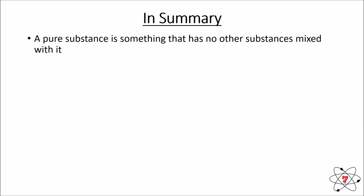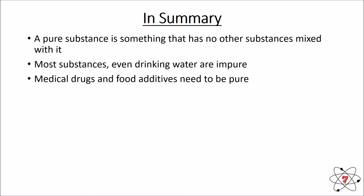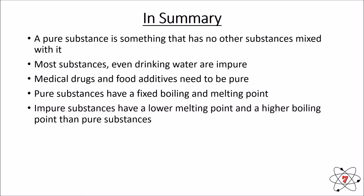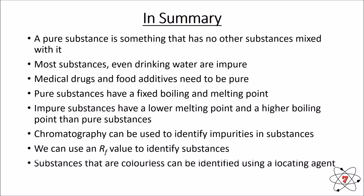In summary: a pure substance is something that has no other substances mixed with it. Most substances, even drinking water, are impure. Medical drugs and food additives need to be pure in order to be safe. Pure substances have fixed boiling points and melting points, while impure substances have a lower melting point and a higher boiling point than pure substances. Chromatography can be used to identify impurities, and RF values help identify different substances. Colorless substances such as amino acids can be identified using a locating agent.